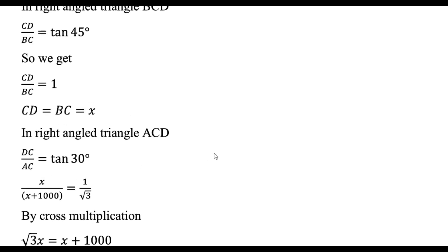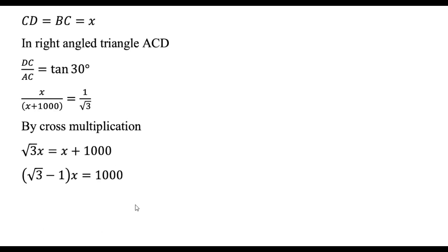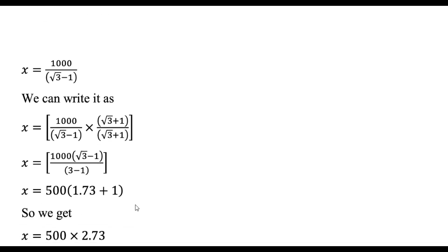In the right angled triangle ACD, that's the larger triangle. DC by AC is equal to tan 30. Tan 30 is equal to 1 by root 3. Now put the values DC by AC. After that, cross multiplication.